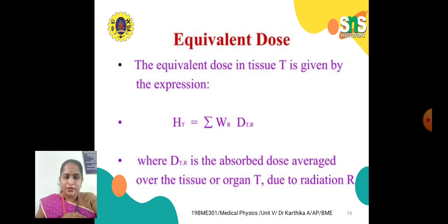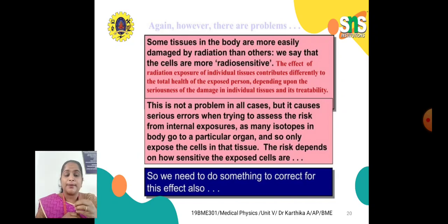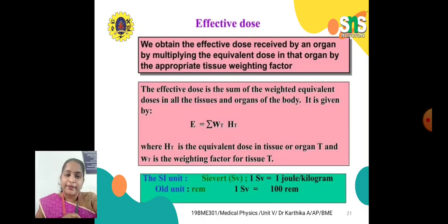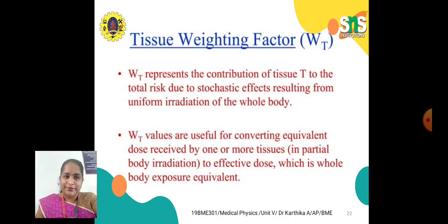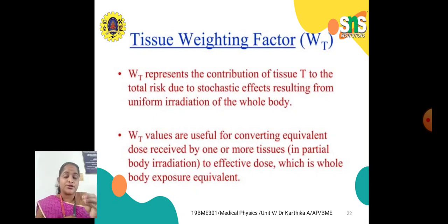To calculate equivalent dose: Ht = Σ(wr × Dtr), where Dtr is the absorbed dose averaged over tissue or organ t due to radiation r. Some tissues are more easily damaged by radiation than others — they are more radiosensitive. So we calculate effective dose: E = Σ(wt × Ht), where Ht is the equivalent dose in tissue t and wt is the tissue weighting factor for tissue t.